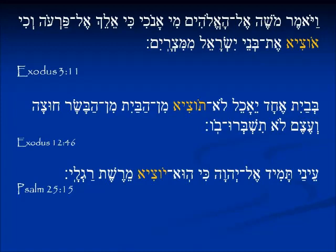In Exodus 12:46, speaking of the lamb to be roasted that night, that none of it should be brought out from the house: b'vayit echad ye'achel — in one house it will be eaten; this is a Nifal form, ye'achel. Lo totzi min habayit min habasar — do not bring out from the house. It's a command to you: you will not bring out from the house any of that meat.